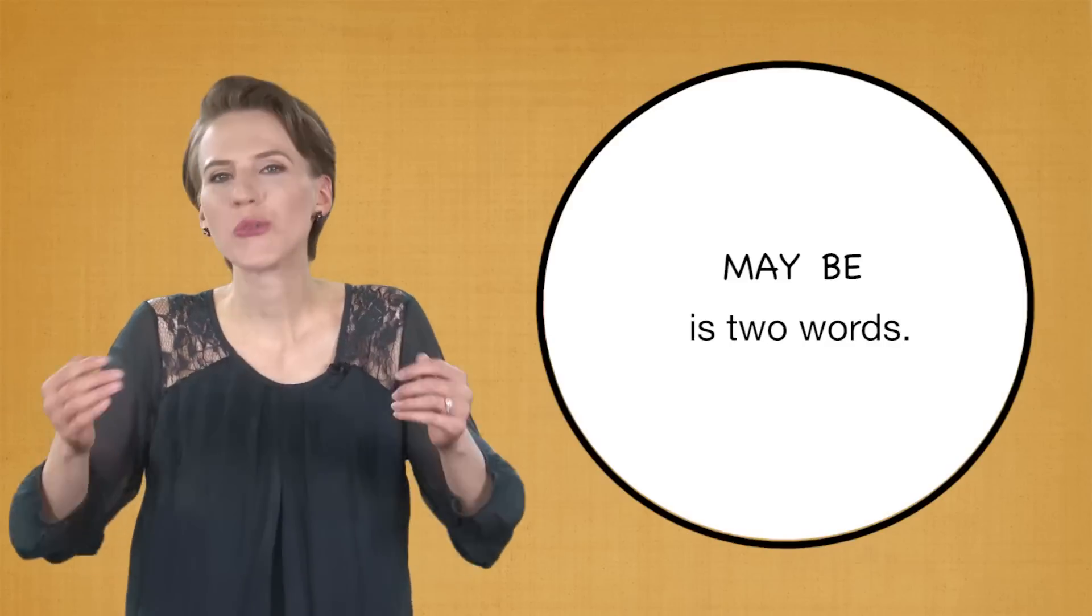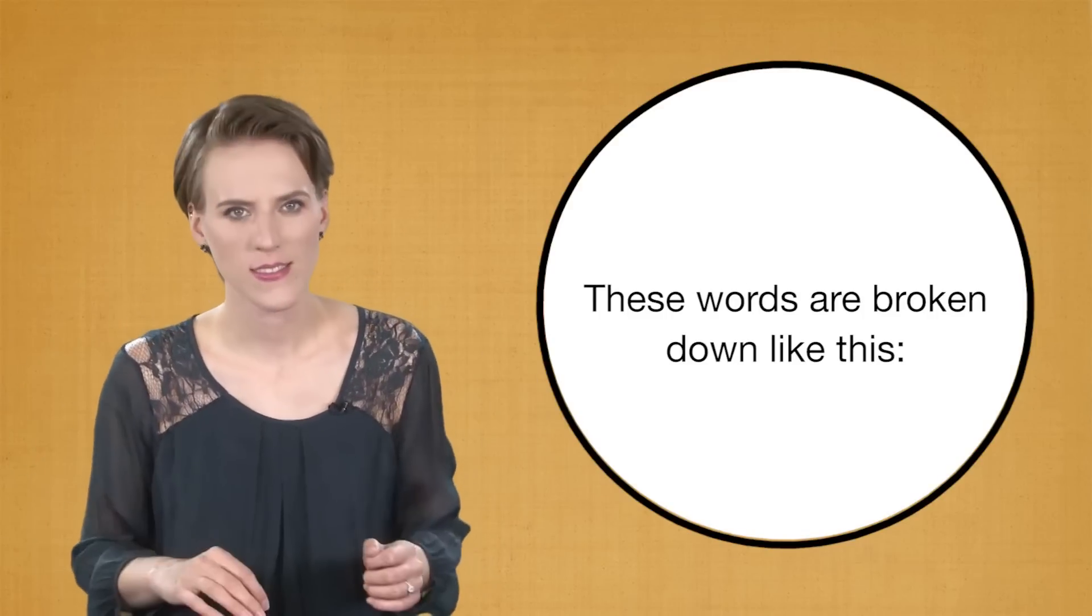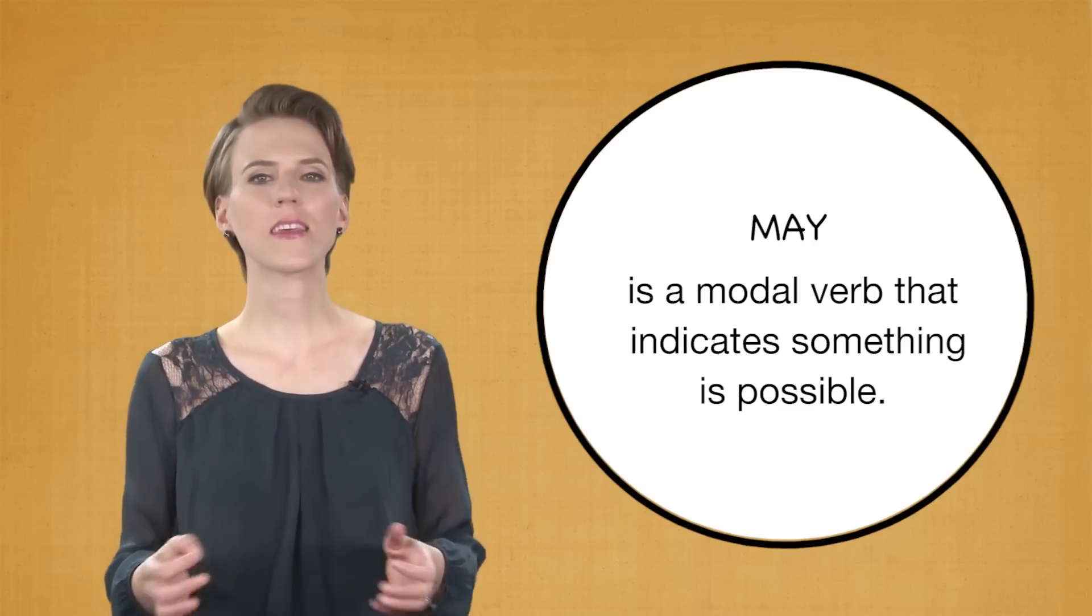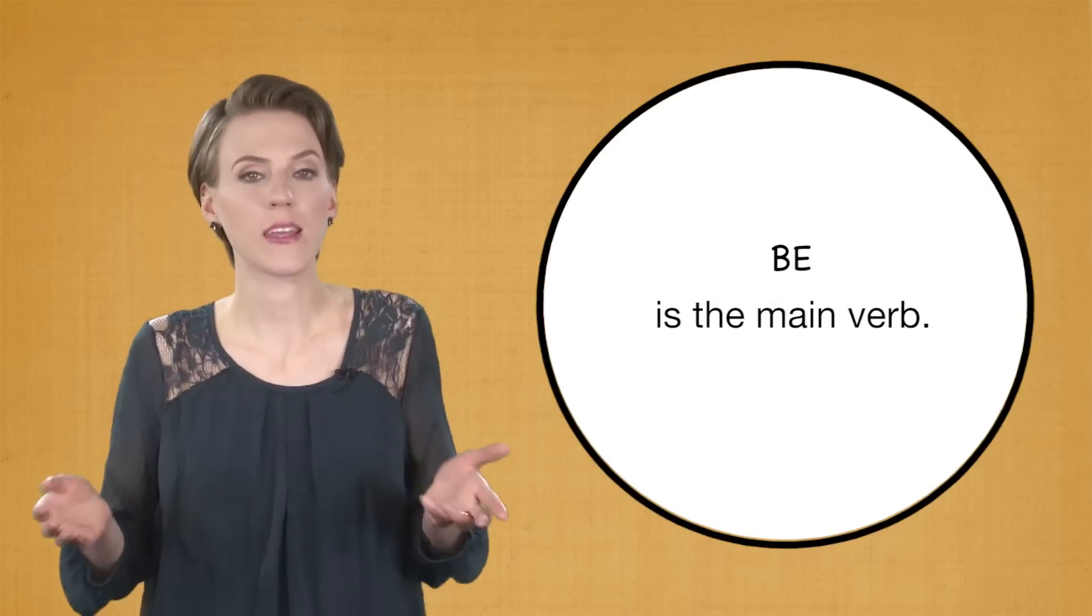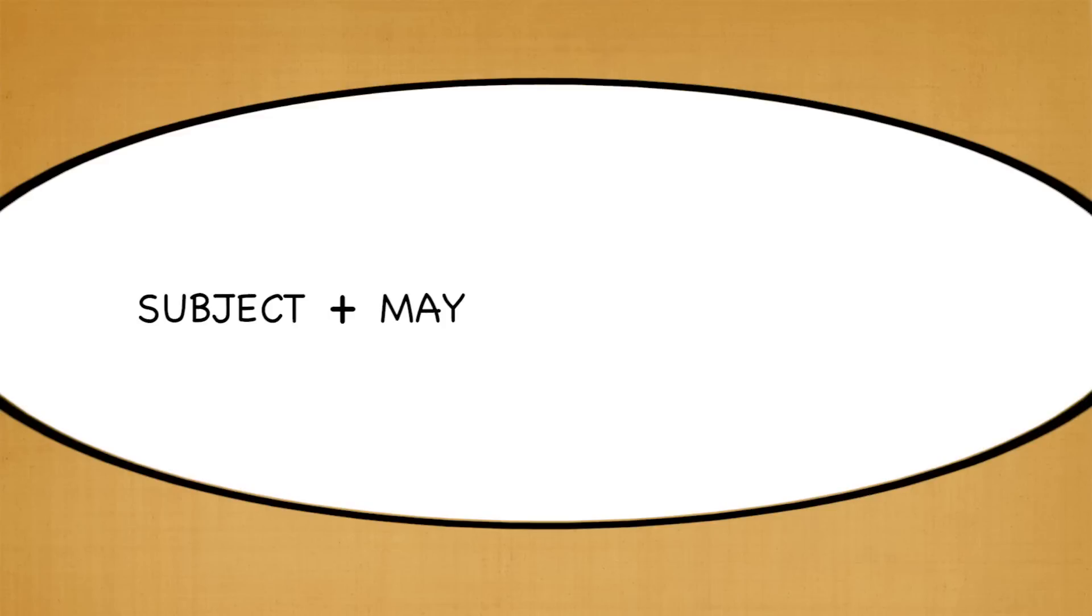May be is two words. These words are broken down like this: May is a modal verb that indicates something is possible. Be is the main verb. The sentence structure is subject plus may plus be plus the rest of the sentence.